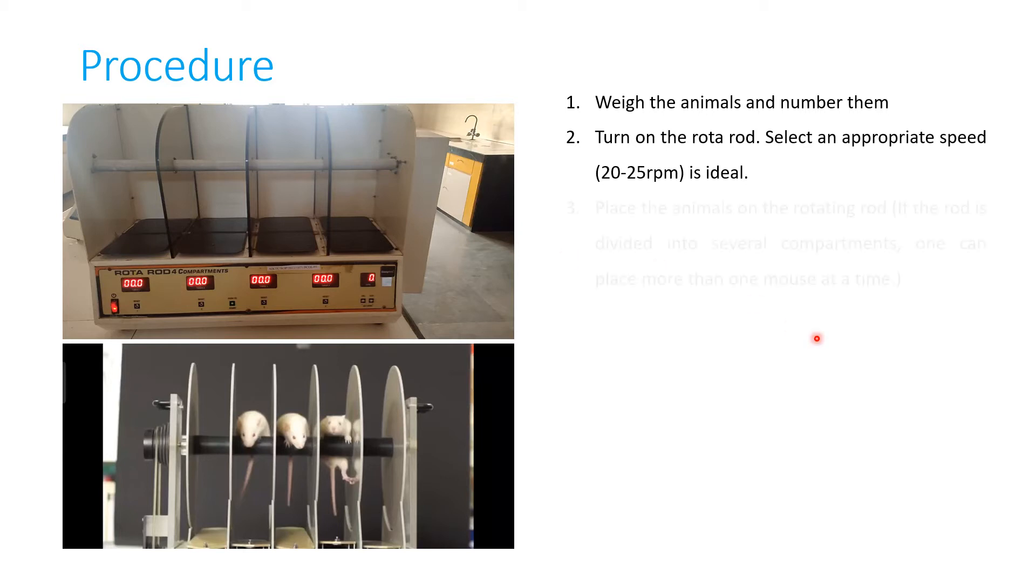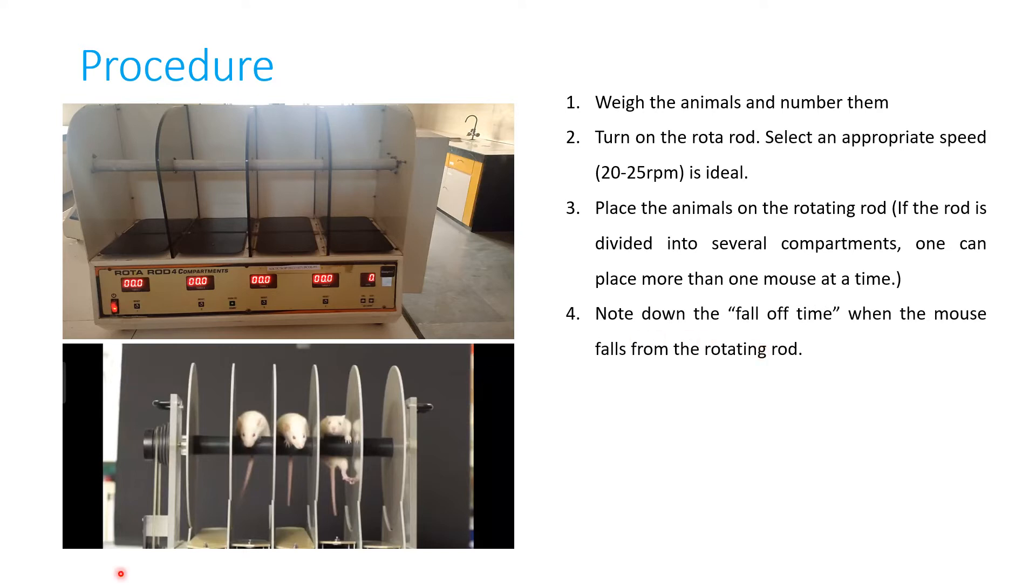We will place the animal on the rotating rod. If the rod is divided into several compartments, like here in this instrument there are 4 compartments, one can place more than one mouse at a time. Then we will turn on the apparatus and note down the fall off time when the mouse falls from the rotating rod.